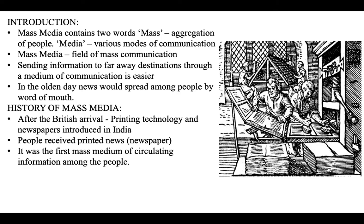History of mass media: Printing technology and newspapers were introduced in India after the arrival of the British. Till then, the old method of a messenger carrying news to a common place was used. People started receiving printed news through newspapers, and newspapers became the first mass medium of circulating information and knowledge among people.